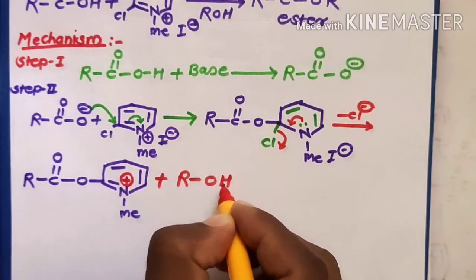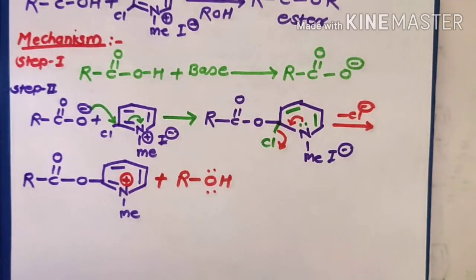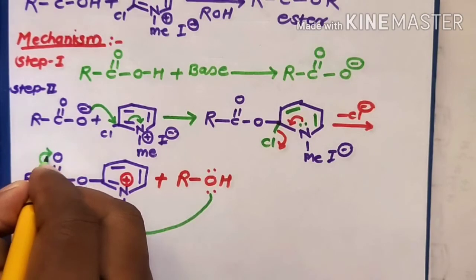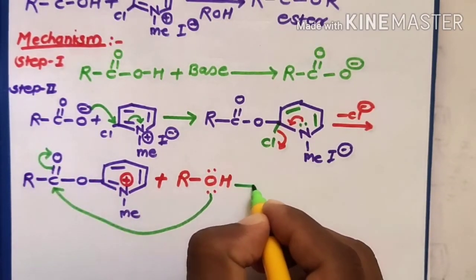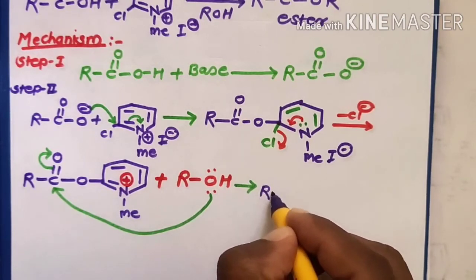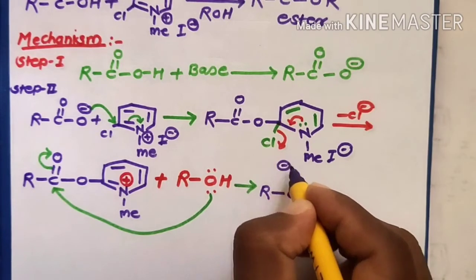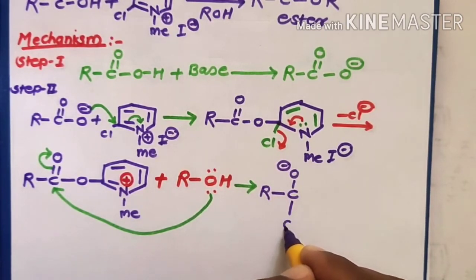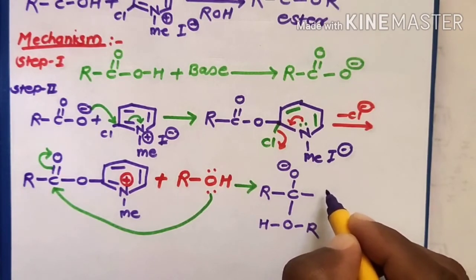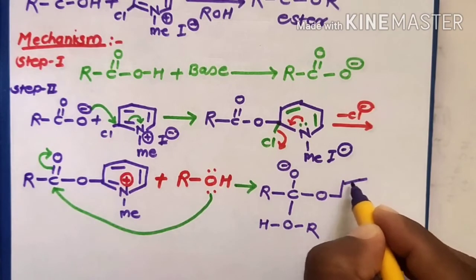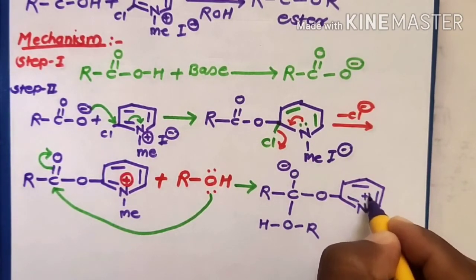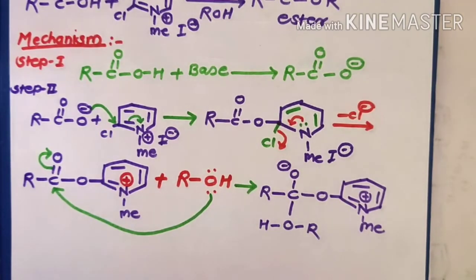This intermediate then reacts in the presence of alcohol (R-OH). The oxygen's non-bonded pair of electrons donates toward the electron-deficient carbonyl carbon atom. The bonding electrons shift toward the oxygen atom to form O minus ions, giving a new compound with the groups R-C-O minus, O-H, R, the aromatic nucleus, O, N with a positive charge, and a methyl group.